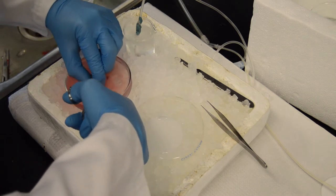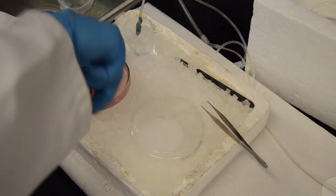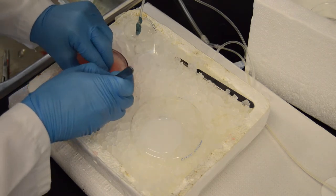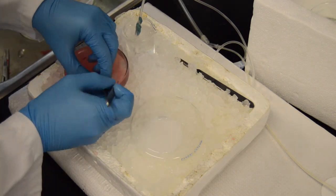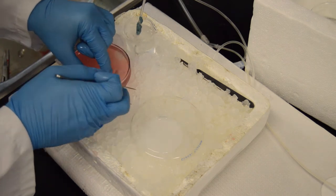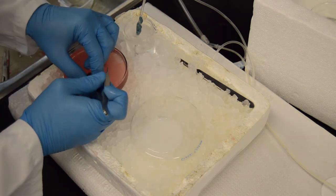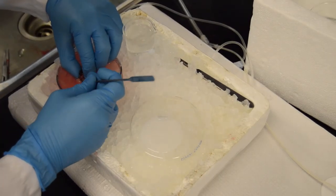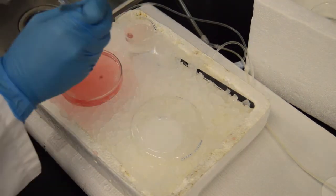In order to prepare the brain for slicing, we first need to extract the brain. To do this, we make an incision along the longitudinal fissure of the skull, and then pull back the pieces of the skull and meninges lying underneath. We then carefully extract the brain and place it into bubbling carbogen ACSF.